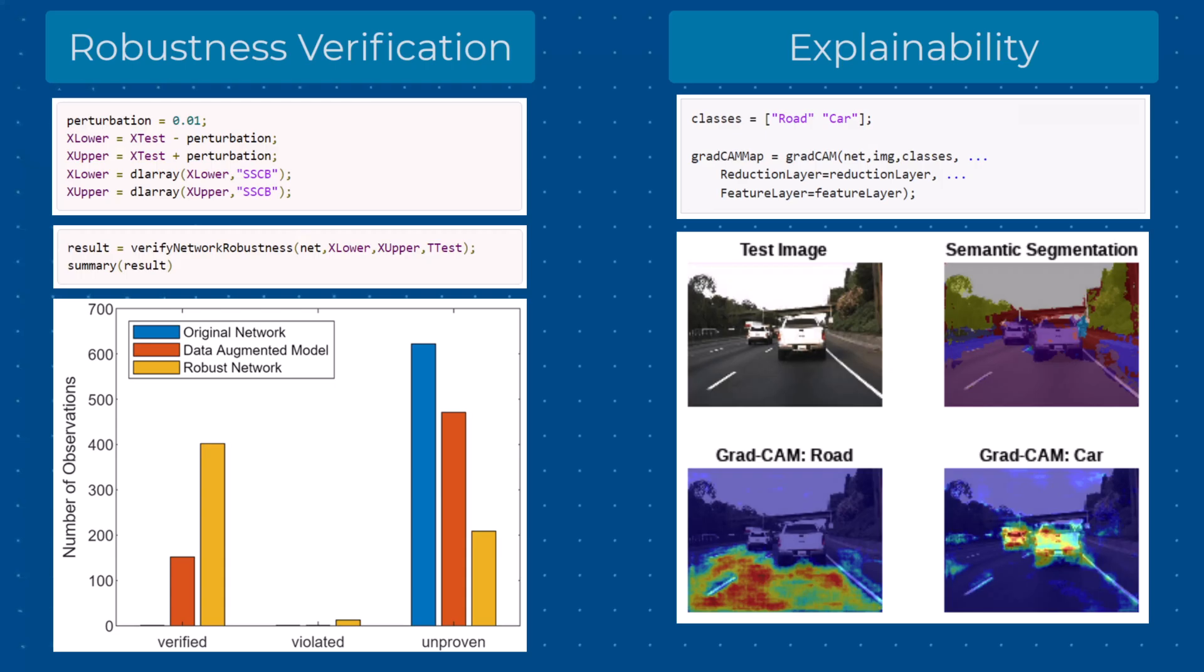In addition to simulation, you can use robustness verification and explainability techniques. This ensures that your deep learning models work as intended before deploying to target.